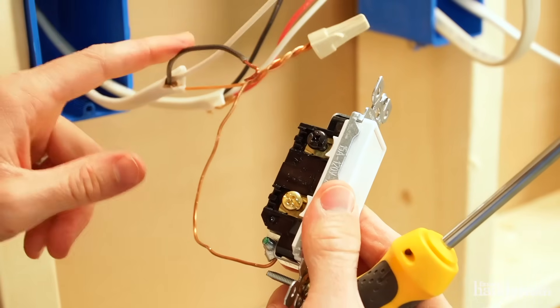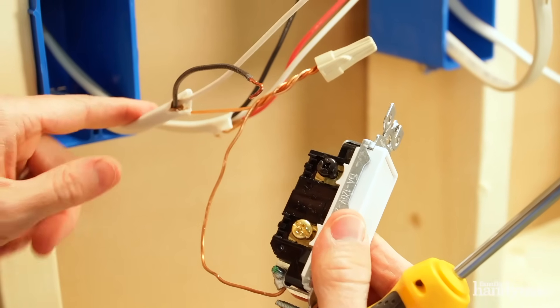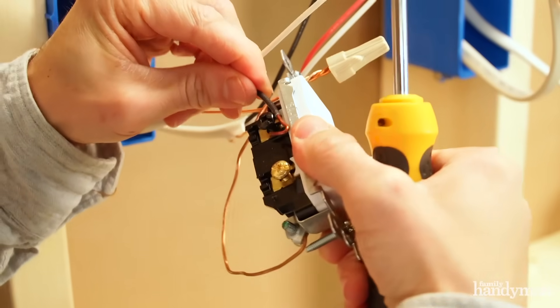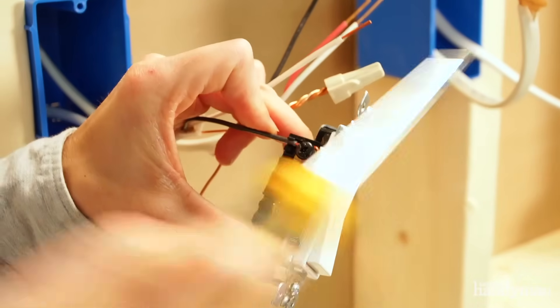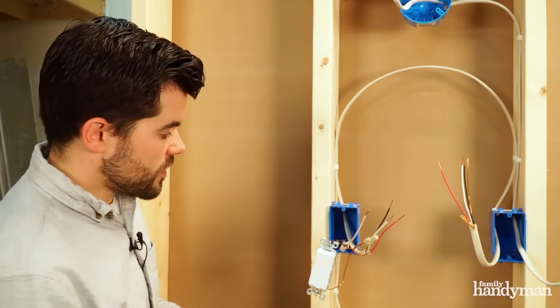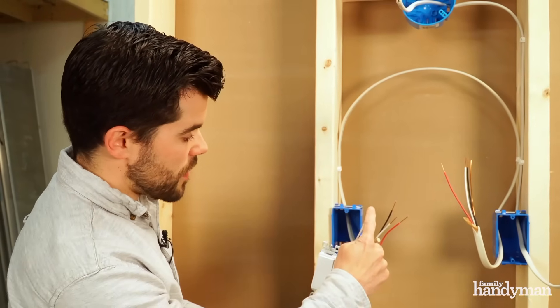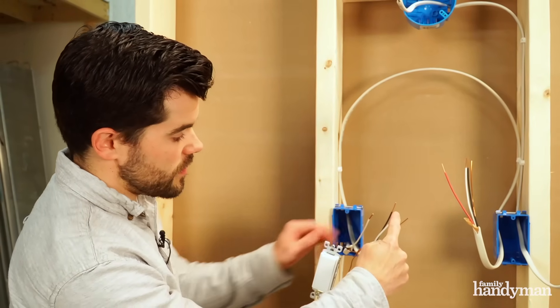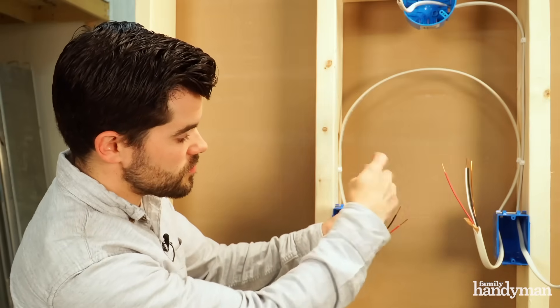Then attach the black wire from the power coming in to the common terminal. Now you're going to connect the neutral wire from the power coming in to the neutral wire in the common cable between the two switches.